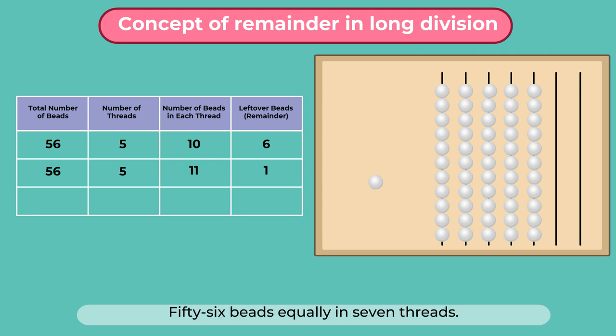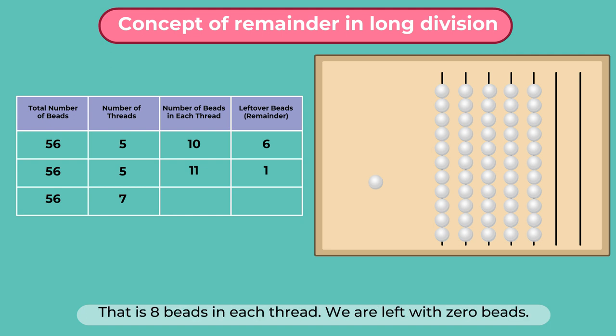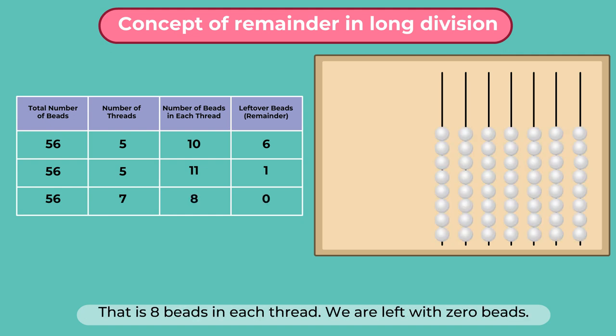Let's string 56 beads equally in 7 threads. That is 8 beads in each thread. We are left with 0 beads now.